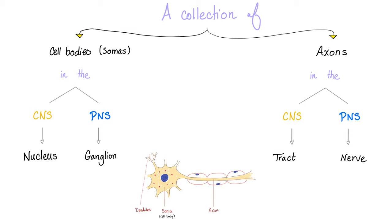Where is the dorsal root ganglion? Peripheral nervous system. Where is the sphenopalatine ganglion? Peripheral nervous system. Ciliary ganglion? Peripheral nervous system. Otic ganglion? Peripheral nervous system. Terminal ganglia? Peripheral nervous system. Sympathetic chain ganglia? Peripheral nervous system.